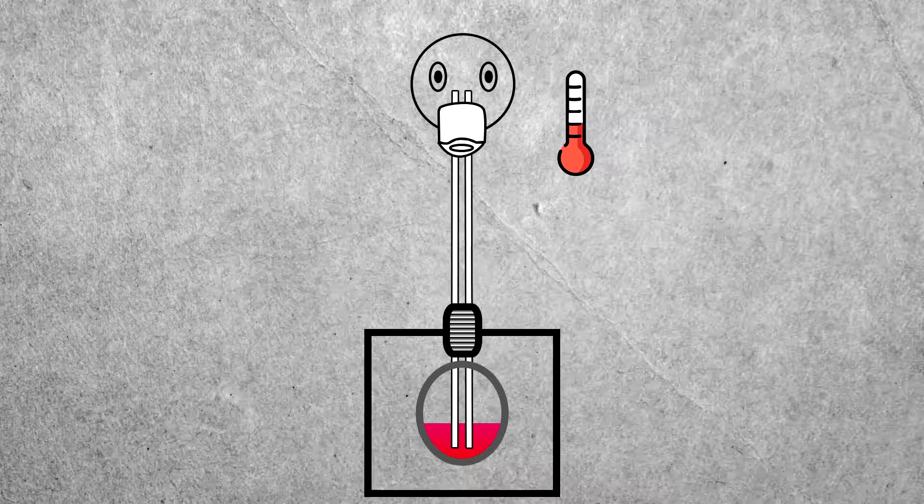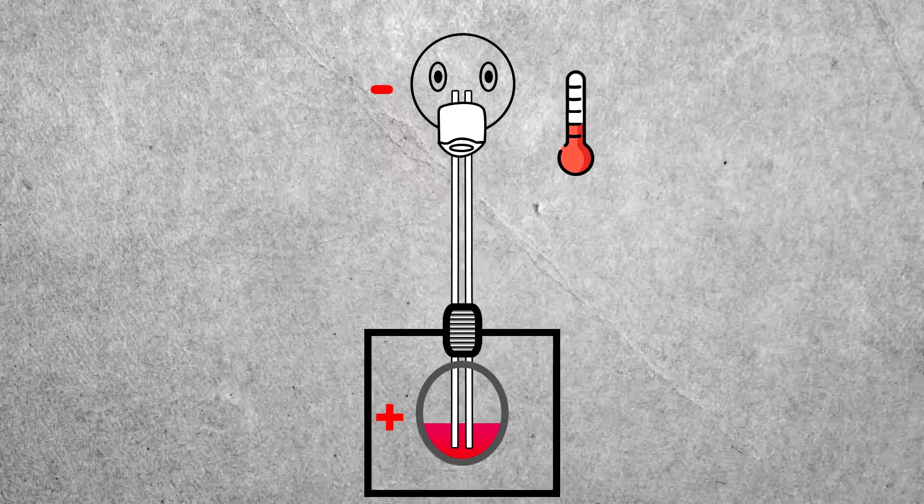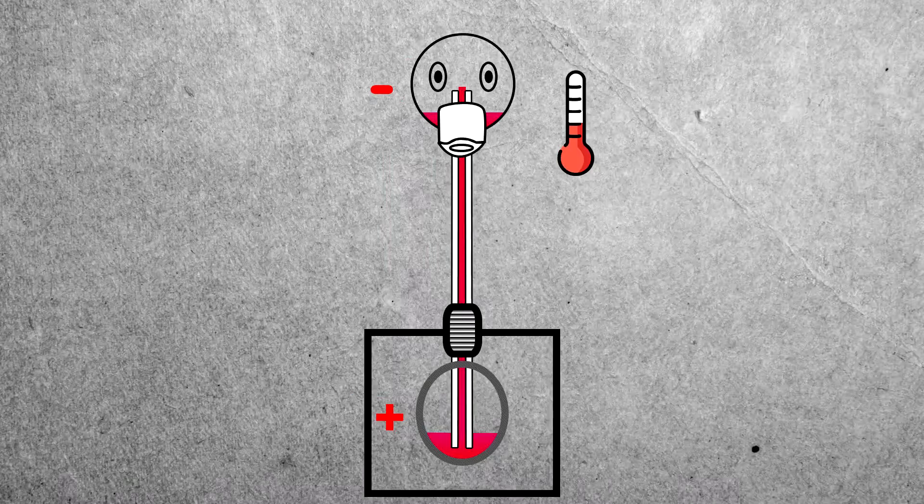This will make the head slightly colder, creating a pressure difference between head and bottom, making it possible for the liquid to rise through the tube.